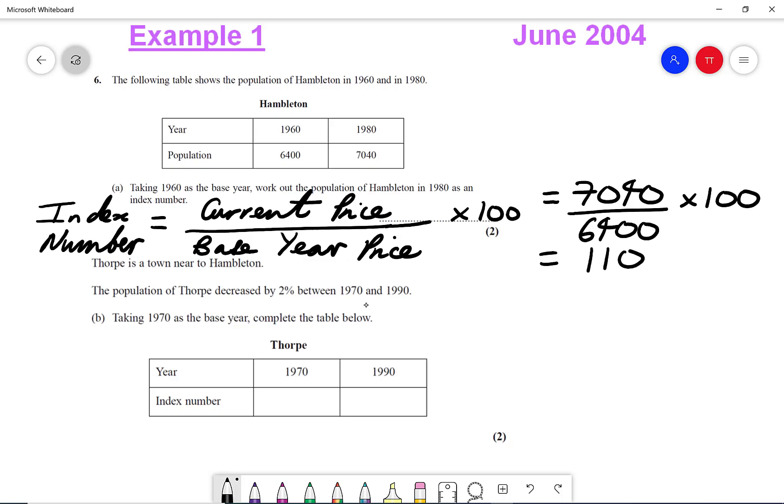So the index number would simply be 110. Then it says Thorpe is a town near Hamilton. The population decreased by 2% between 1970 and 1990. Taking 1970 as the base year, complete the table below.